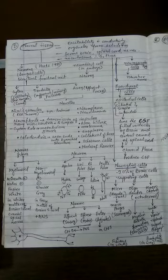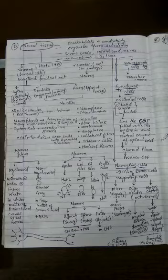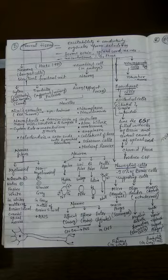So ectoderm gives rise to the neural tissue. The portions of the neural tissues are basically brain, spinal cord, and the nerves. So three things constitute to form the neural tissue, and the main cells of this tissue are definitely neurons.